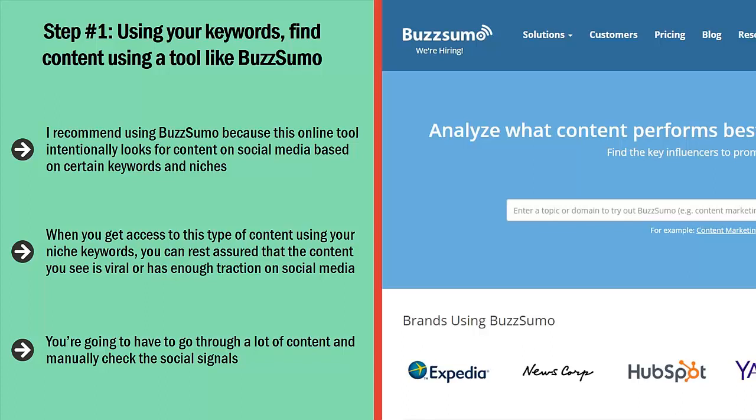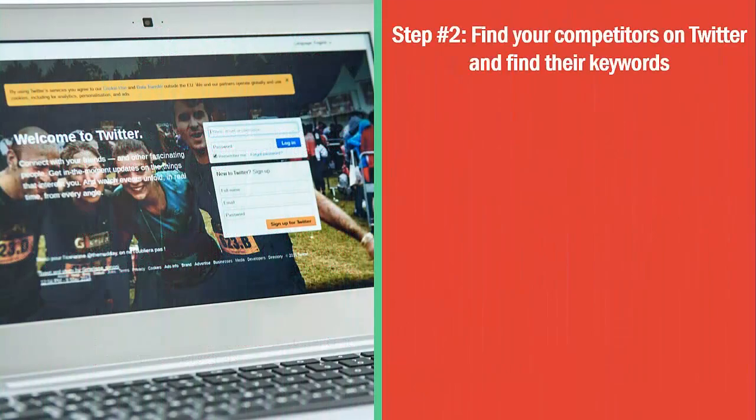Otherwise, it's going to be very hard for you to do this manually. You're going to have to go through a lot of content and manually check the social signals. It's very tedious, it burns a lot of time, and in many cases you are still not sure if you got the right content. Step number two: find your competitors on Twitter and find their keywords.